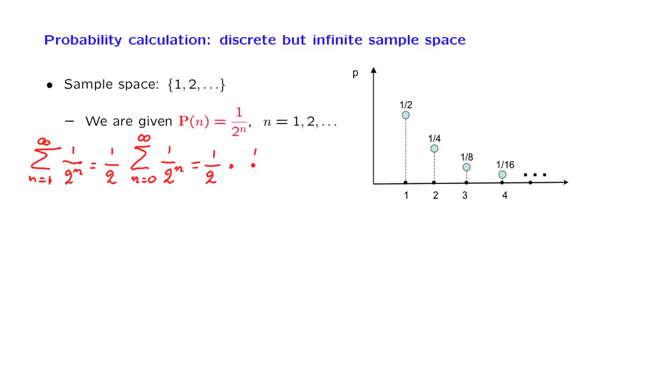And we have a formula for this. The geometric series has a value of 1 over 1 minus the number whose power we're taking, which is 1 half. And after we do the arithmetic, this turns out to be equal to 1.